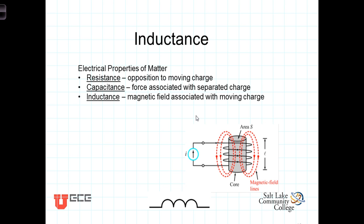In this video we're going to consider a third electrical property known as inductance. We've already talked about resistance, which is a measure of a material's opposition to the movement of charge. We've talked about capacitance, which is a measure of the force associated between two charged particles, and now inductance. Inductance is a measure of the magnetic field that's associated with a moving charge.